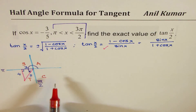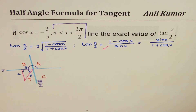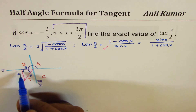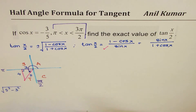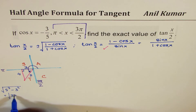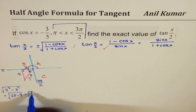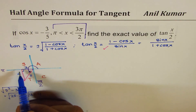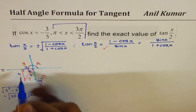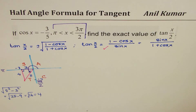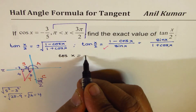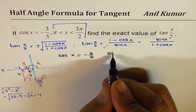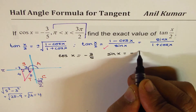Using the Pythagorean theorem, the missing side is square root of (5 squared minus 3 squared) equals square root of (25 minus 9) equals square root of 16 equals 4. Since the point moves downward, we treat this as negative 4. So the point is at (minus 3, minus 4). Since we are in quadrant 3, both sin and cosine are negative: cos x is given as minus 3 over 5, and sin x equals minus 4 over 5.